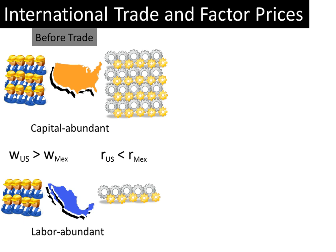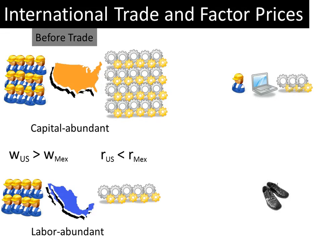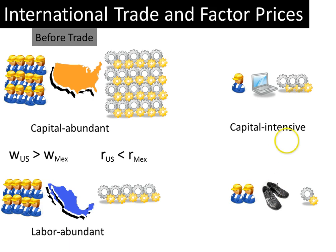Now let's say both countries produce two goods: a laptop computer and shoes. Both goods are produced using both factors of production. To produce a laptop, you need a little bit of labor but a lot of capital. To produce shoes, you need a lot of labor but just a little bit of capital. You require more capital per worker in the production of laptops than in the production of shoes, so laptops are the capital intensive good. Inversely, shoes require more labor per unit of capital, so shoes are a labor intensive good.